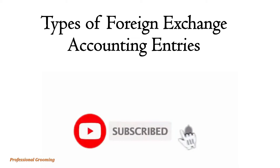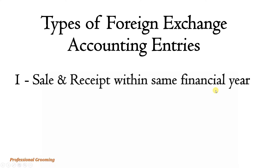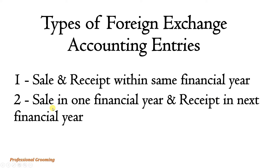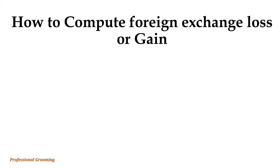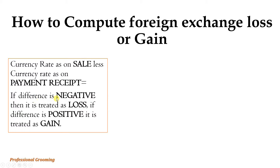We will discuss two types of foreign exchange accounting entries: sale and receipt within the same financial year, and sale in one financial year with payment receipt in the next financial year. To compute foreign exchange loss or gain: currency rate at sale minus currency rate at payment receipt. If the difference is negative, it is a loss; if positive, it is a gain.